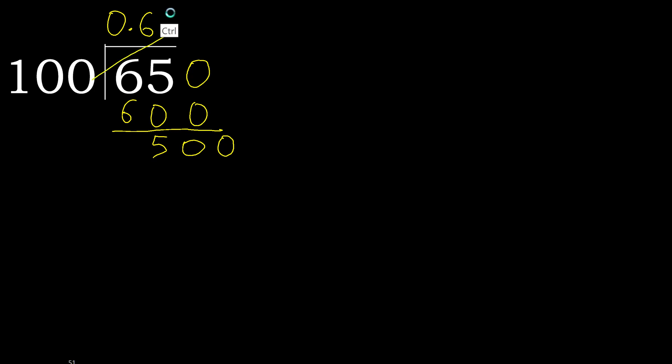500. 100 multiplied by 5 is 500. Subtract 0, remainder is 0, therefore finish.